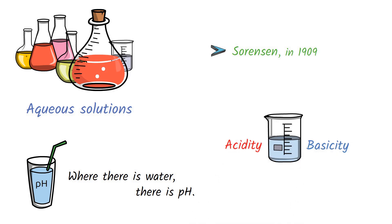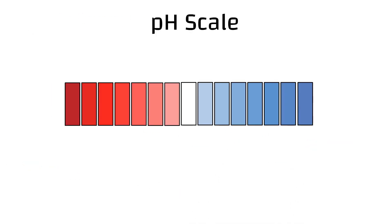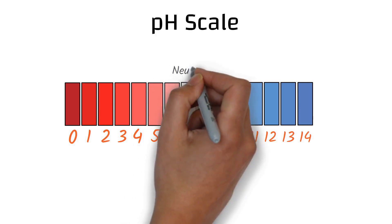pH reveals the acidity or basicity of water. The pH scale ranges from 0 to 14, where the value 7 indicates the neutral pH.